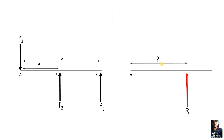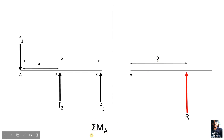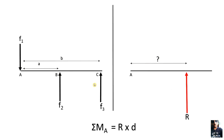So how do we find this distance? For this distance, we use Varignon's theorem. Now according to Varignon's theorem, the total moment generated by all the forces in the system is equal to the moment generated by the resultant of that system. This means that all the forces create the same moment as the resultant force.